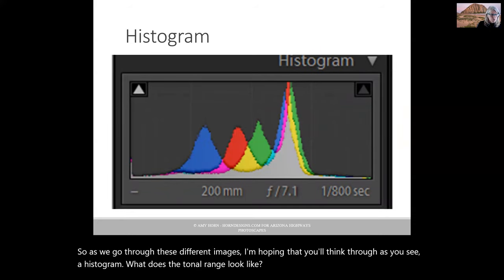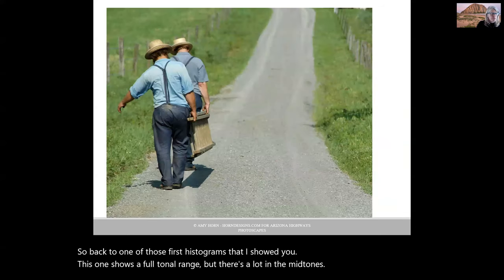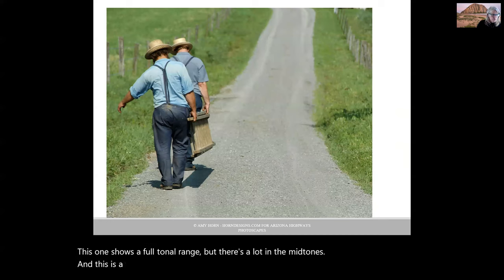Back to one of those first histograms that I showed you. This one shows a full tonal range, but there's a lot in the mid-tones. And this is a mid-day photo, so indicative of partial shadows and bright light on our subjects.